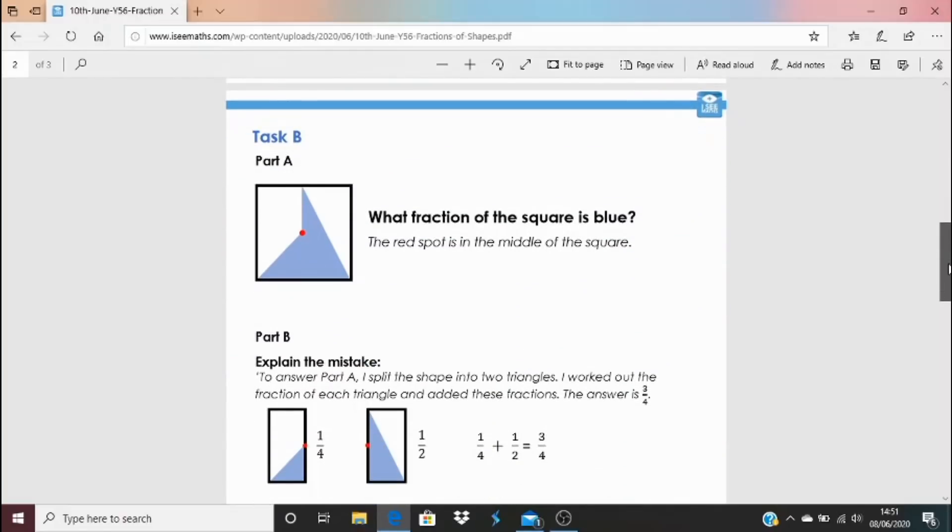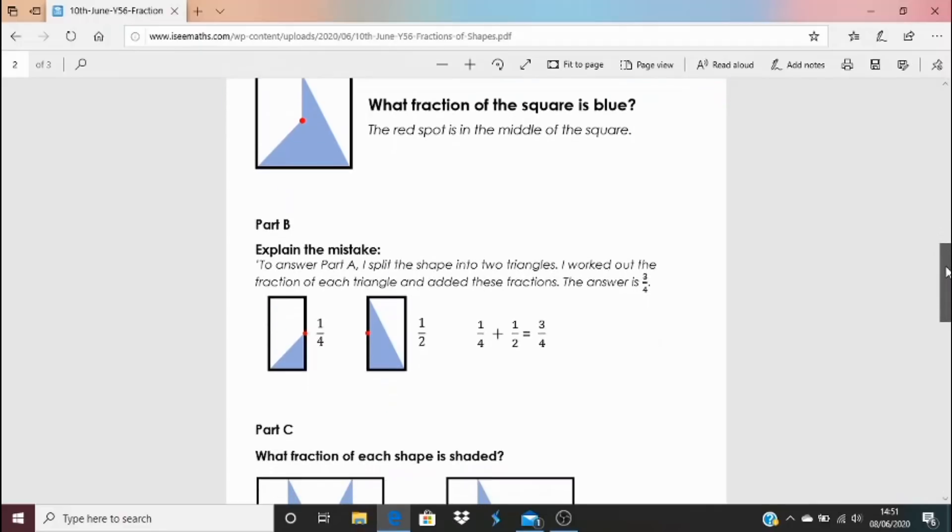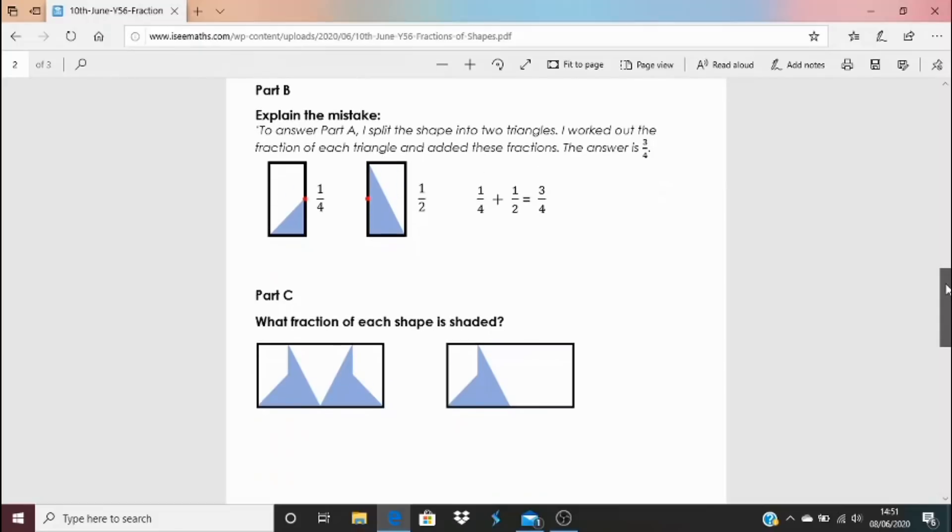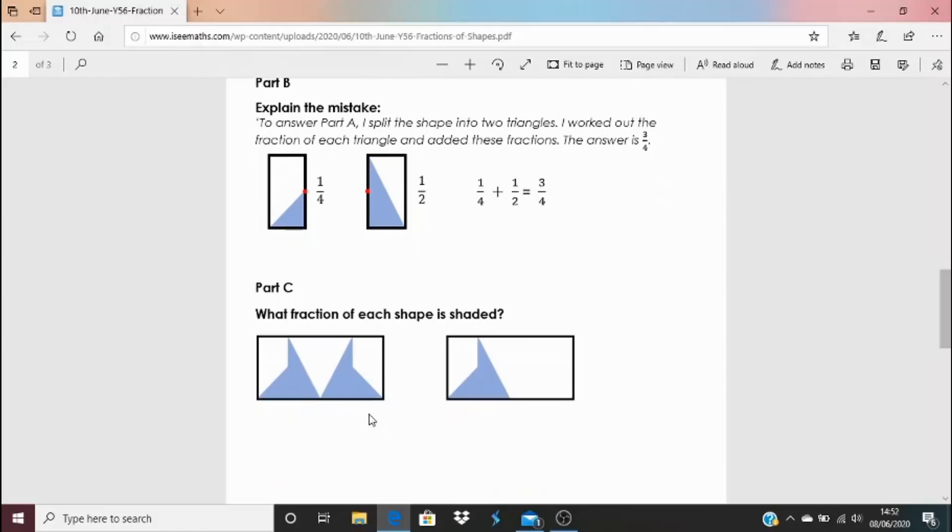Then to move on to task B. I love task B. Have a look at this. The red dot is in the middle of this square. So what fraction of this square is blue? And how do you know? So then to move your thinking forward, have a go at parts B and C. For part B, this is an attempt to answer this main question, and it's been done incorrectly. But what's incorrect about it? It seems to make sense. And then for an extension for part C, what fraction of each of these two shapes is shaded? How can you link the first task, part A, to part C to help you with that?